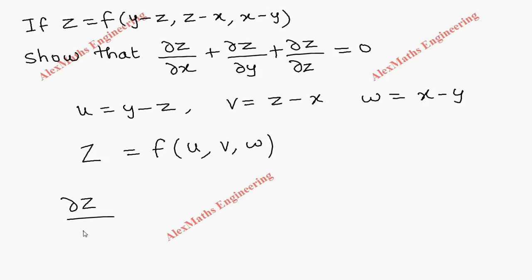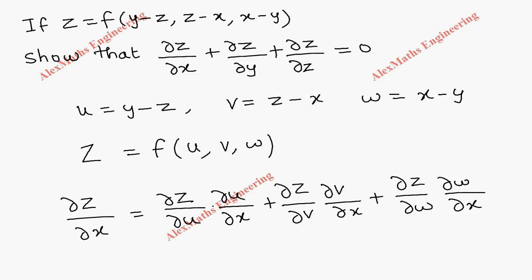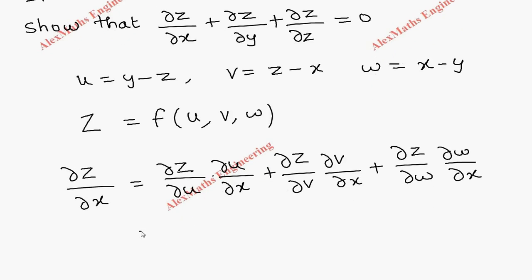∂Z/∂x is nothing but ∂Z/∂u times ∂u/∂x, plus ∂Z/∂v times ∂v/∂x, plus ∂Z/∂w times ∂w/∂x — applying the chain rule.